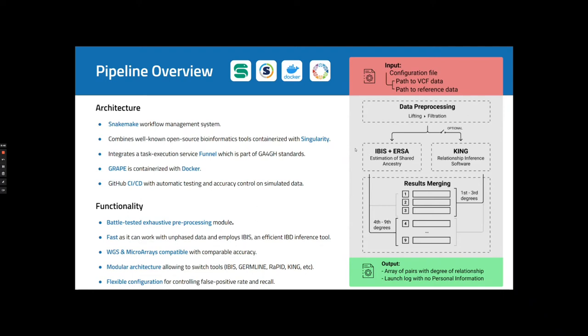Then GRAPE performs an IBD inference and assigns relationship degrees using ERSA. It is worth noting that GRAPE has modular architecture that allows to switch between tools.